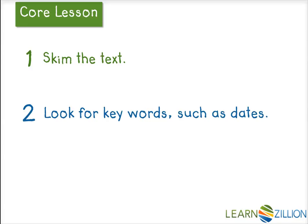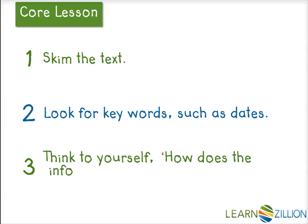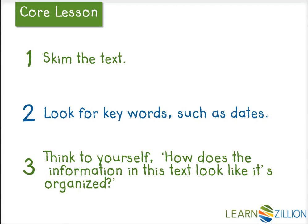You can also look for other things in other lessons like compare and contrast and subheadings. Then I looked for the key words such as dates — I saw 18th century, 1819, and 1900 just in that example. Once I wrote it down, I could think to myself, how does this information in the text look like it's organized? Now I'm prepared to keep reading, knowing that this text is probably going to keep telling me more about the timeline of the bicycle.